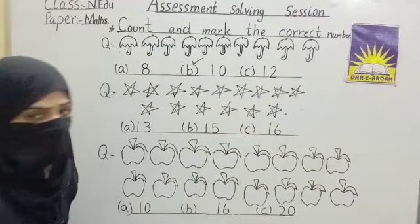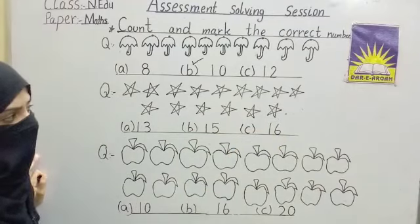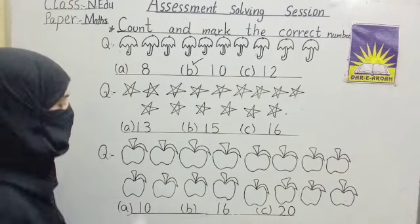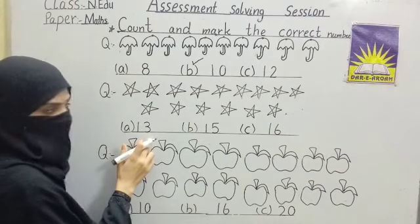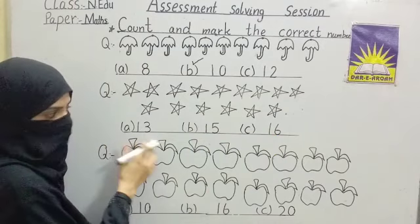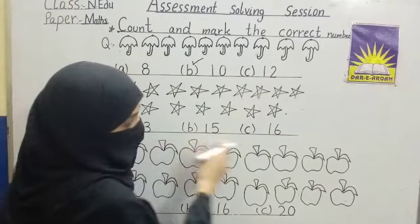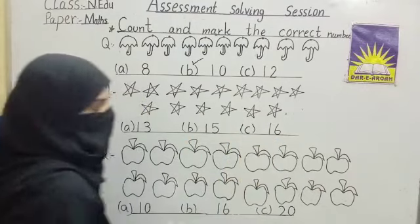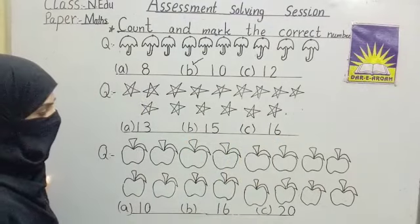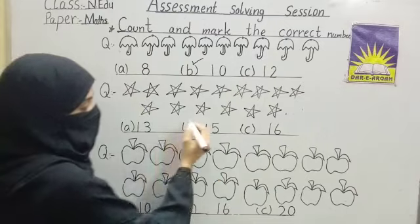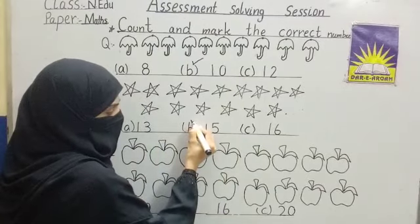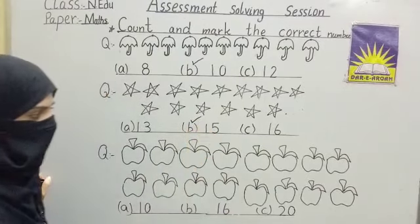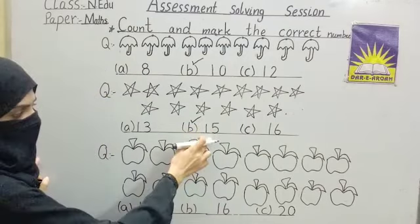How many stars are there? Fifteen. Let's see the options. Option A: thirteen. Option B: fifteen. Option C: sixteen. How many stars? Yes, fifteen. Tick option B — fifteen stars.